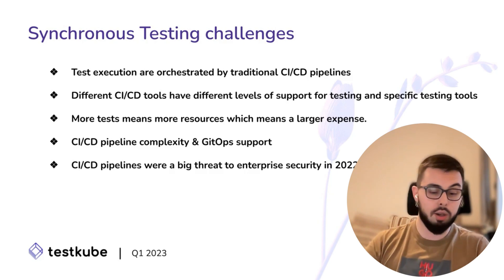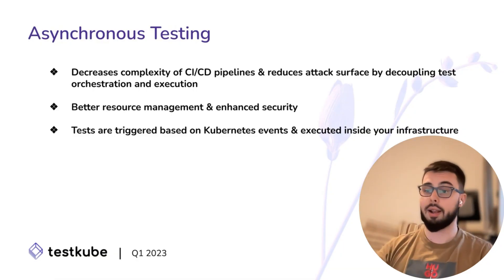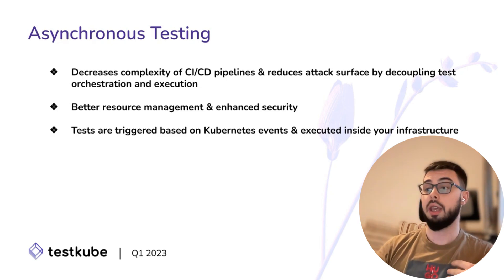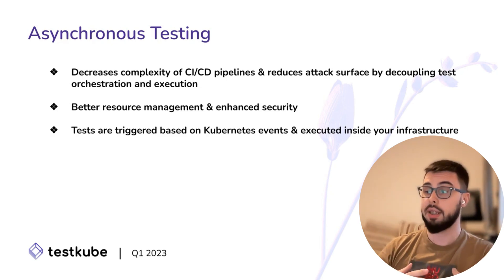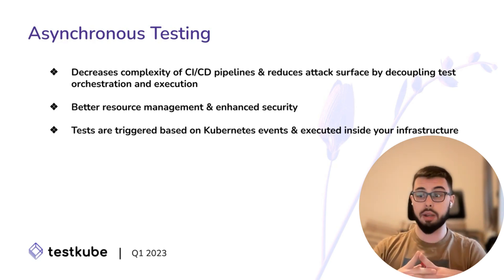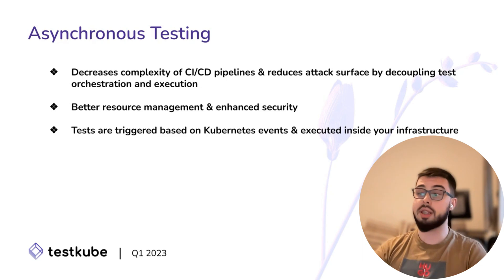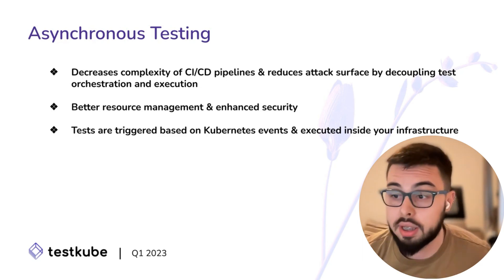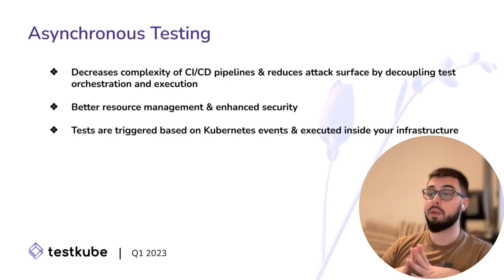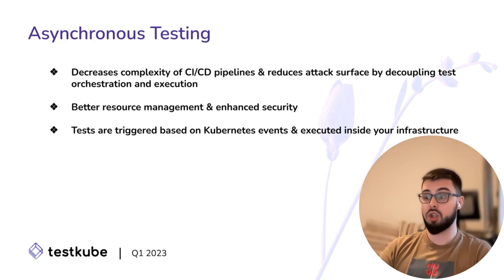Now let's see what we can do about it. As mentioned in the title: asynchronous testing. That is a powerful practice for ensuring the reliability and performance of software, and we ensure that while we trigger our tests by Kubernetes and external events. For example, we could define one set of tests to be triggered when a new version of an application is deployed, another set when an application gets scaled up and down, and a third set when a change occurs in the application configuration. Running tests with a dedicated tool like Testkube inside Kubernetes provides a more secure and better option compared to synchronous testing and traditional CI-CD pipelines.